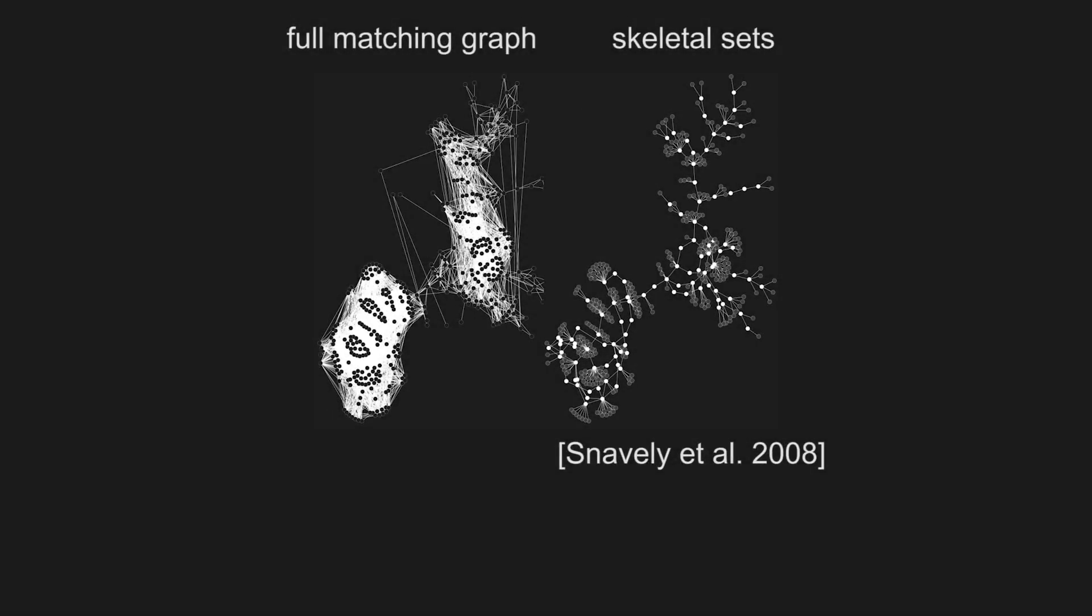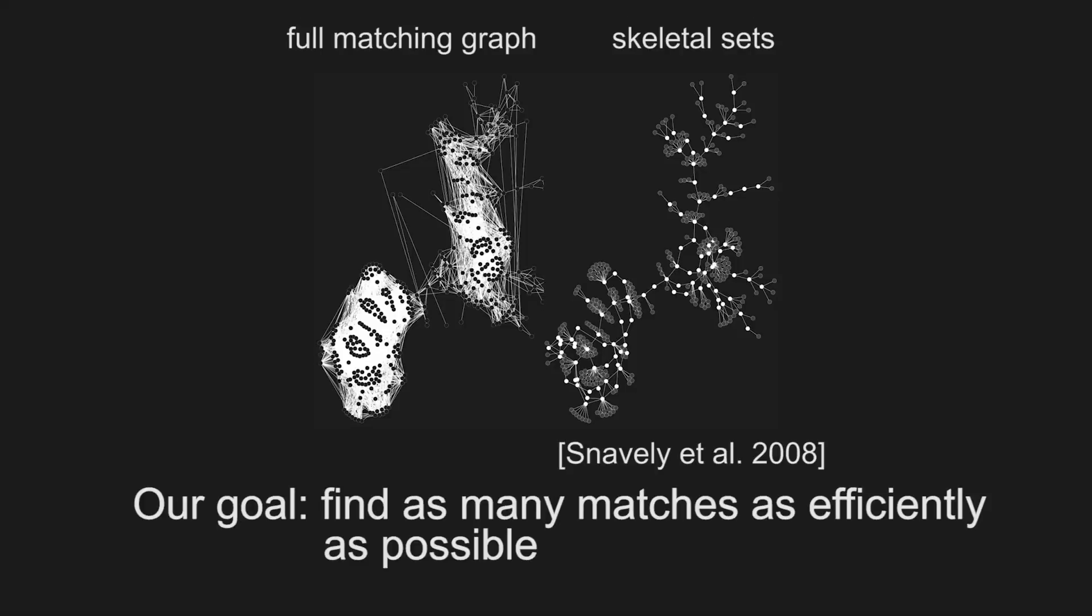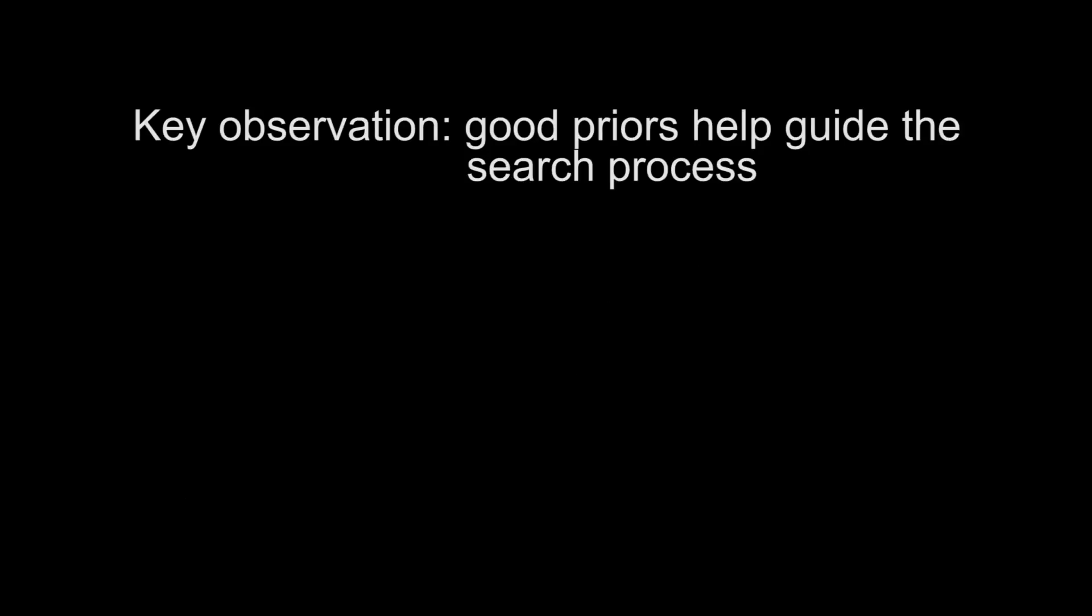Unlike previous approaches which attempt to find a minimal set of matches to produce good SFM reconstruction, the goal of this work is to find as many good matches as efficiently as possible. Our key observation is that good priors can make the matching process much more efficient.